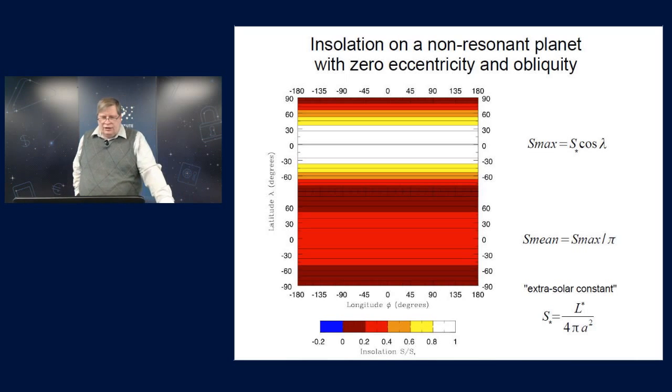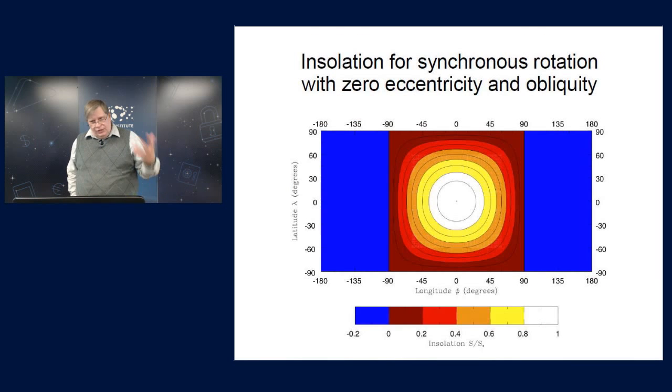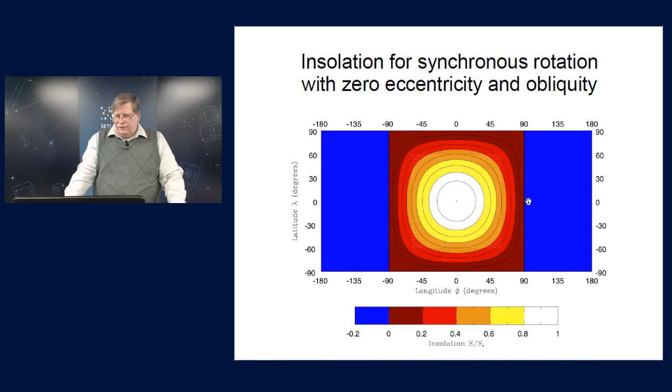But now let's look at the synchronous resonance for comparison. Now I've plotted the same kind of thing, except the maximum insolation and the mean insolation and the minimum insolation are all the same because it never changes. Here's a planet that's always facing onto its sun, and the sun is hovering right over the sub-solar point there, never moving, and this entire hemisphere is illuminated. The illumination drops off as the cosine of the distance from the sub-solar point, until you get to the terminator, and then the whole far side of the planet is dark.